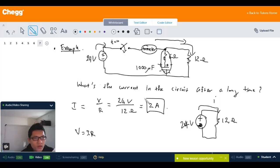This is the steady current or the DC current after a long time after the switch is closed. And yeah, that is the result of the DC current in this circuit. So with this we conclude this video. Thanks for watching.